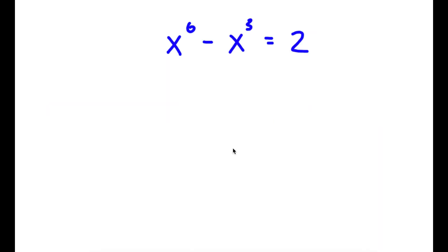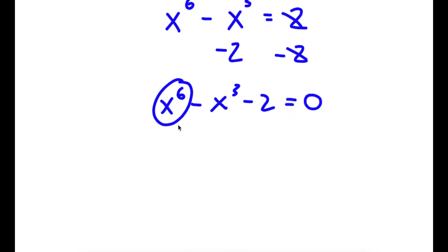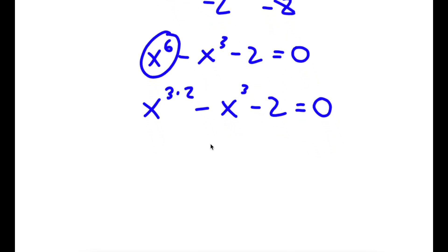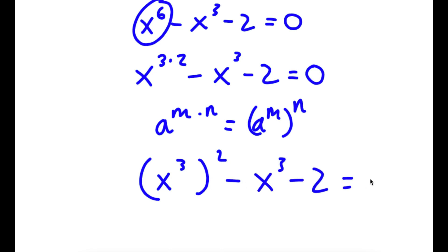In this problem I have x to the power of 6 minus x to the power of 3 plus 3 is equal to 2. To solve this I'm going to first start by subtracting 2 on both sides, so now I have x to the power of 6 minus x to the power of 3 minus 2 is equal to 0. Now I'm going to rewrite x to the power of 6 as x to the power of 3 times 2. If I have something in the form a to the power of m times n, this is equal to a to the power of m to the power of n, so x to the power of 3 times 2 equals x to the power of 3 to the power of 2.